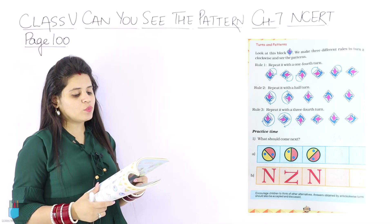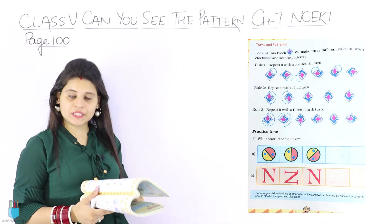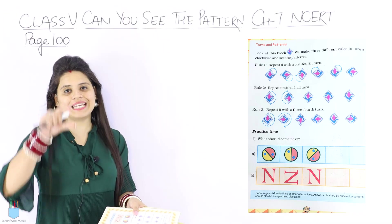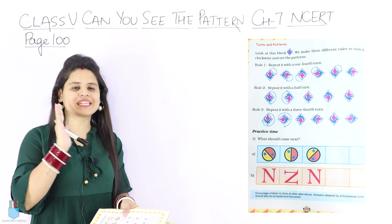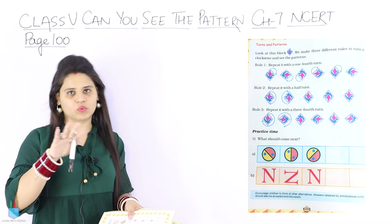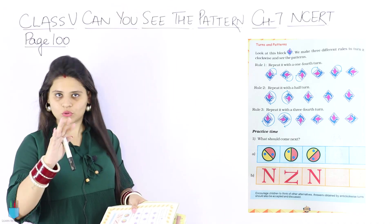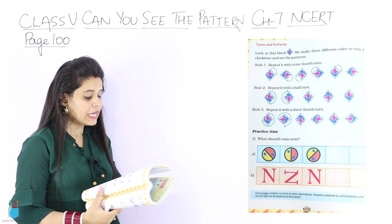Next, repeat it with half a turn. So every time: one straight, one over. Half a turn is basically upside down — one up and the second one down. So this way.